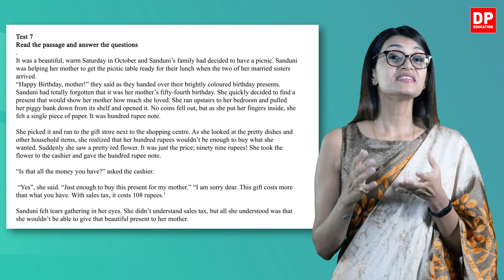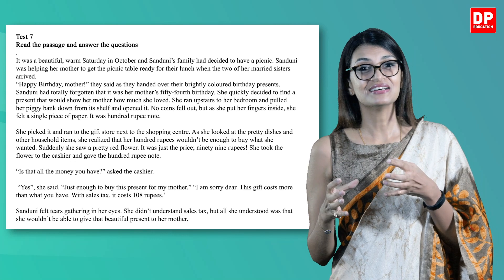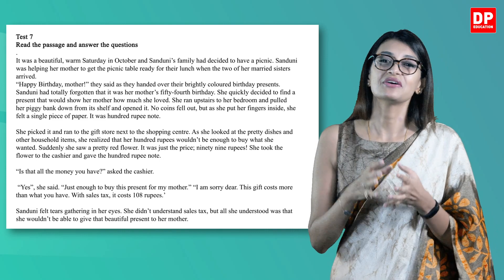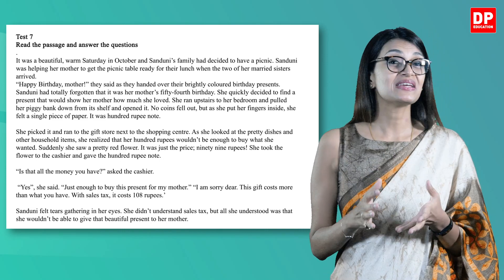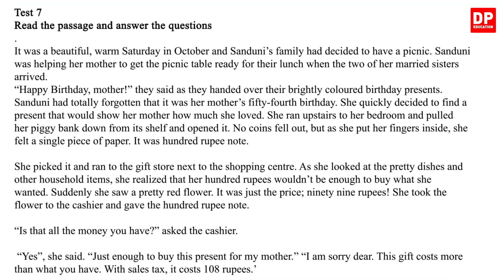Test 7 is a short comprehension passage with MCQs that follow. When we read it and then read the questions, it is important to scan the text for the correct answer. Let's read the short comprehension passage together. It was a beautiful warm Saturday in October and Sandini's family had decided to have a picnic. Sandini was helping her mother to get the picnic table ready for their lunch when two of her married sisters arrived.